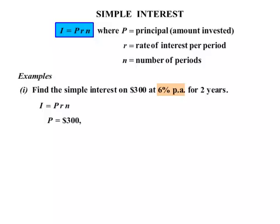6% per annum is our rate, so R equals 6%. And you need to be very good at writing rates as decimals, so 6% is 0.06. And 2 years, so N equals 2.